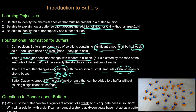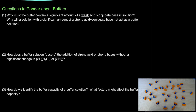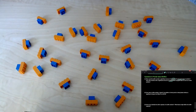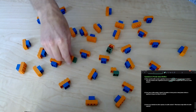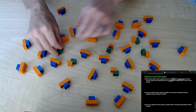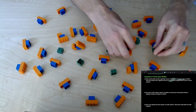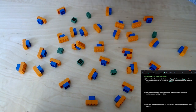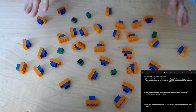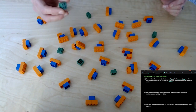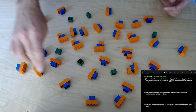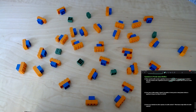Why must a buffer contain a significant amount of a weak acid and its conjugate base? Why can't we use a strong acid? If we add acid molecules and this is a strong acid, every single one of these reacts — we see 100% ionization. We have A⁻ (like the chloride ion) and then a bunch of hydronium ions. This is why we say a strong acid undergoes 100% ionization.